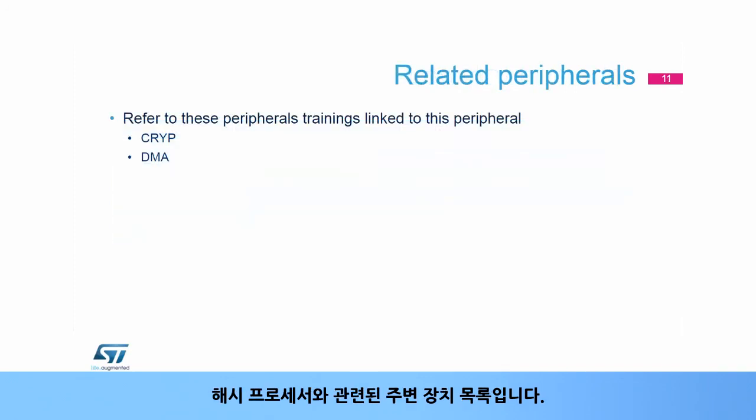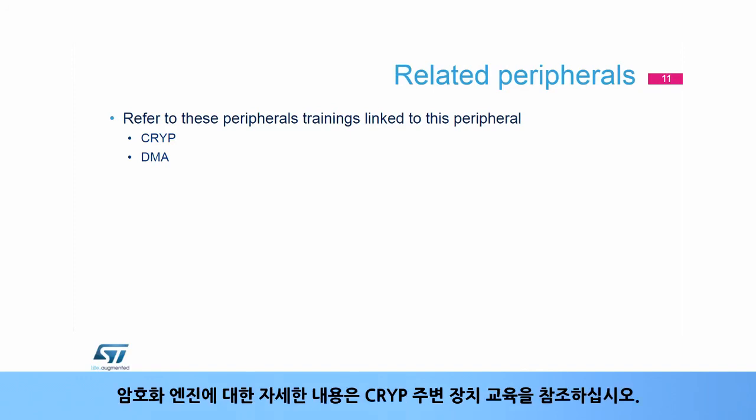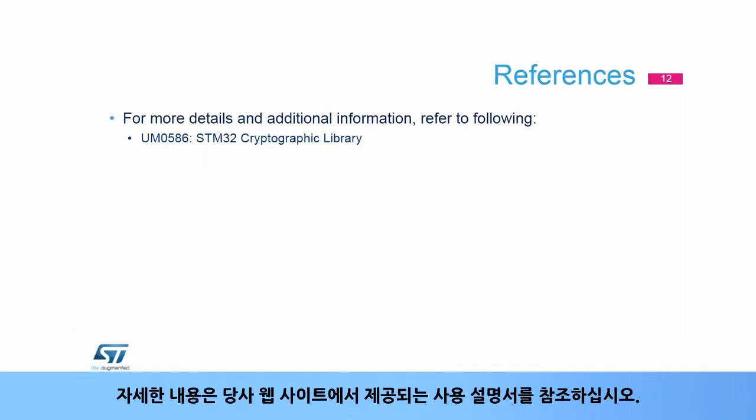This is a list of peripherals related to the hash processor. Please refer to crypt peripheral trainings if you want to know more about cryptographic engines. Refer to training on the DMA peripheral for information on how to configure the hash channel.